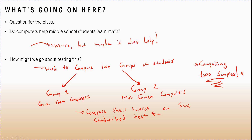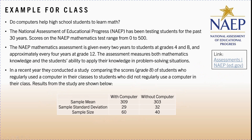Here's the example: do computers help middle school students learn math? The National Assessment of Educational Progress (NAEP) has been testing students for the past 30 years. Scores on the NAEP mathematics test range from 0 to 500. The assessment is given every two years to students at grades 4 and 8, and approximately every four years at grade 12. It measures both mathematics knowledge and students' ability to apply their knowledge in problem-solving situations. In a recent year they conducted a study comparing scores of grade 8 students.